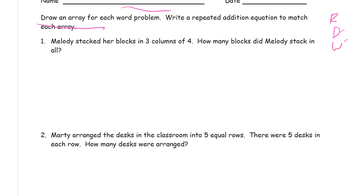Melody stacked her blocks in three columns of four. How many blocks does Melody stack in all? Three columns of four. So you're going to make one column of four first and then make more columns until you have them all. You could say columns of four means I'm going to draw squares for blocks.